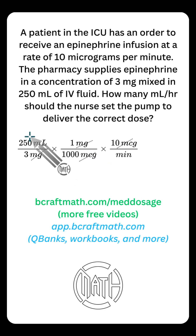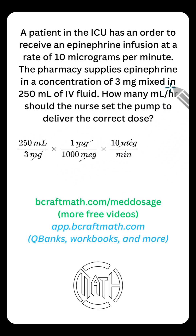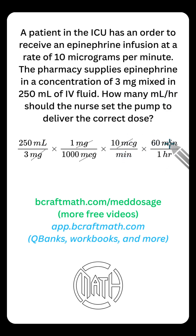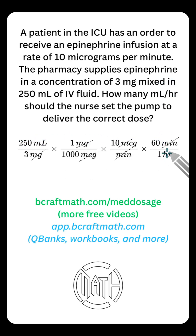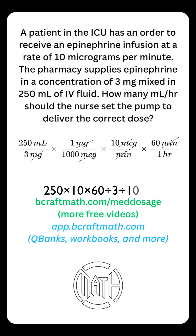If we stopped here we would have milliliters per minute, but we need milliliters per hour, so we have to get rid of minutes. We bring in a conversion: there are 60 minutes in one hour. By putting minutes at the top, we can cancel out minutes. Our goal was milliliters per hour — milliliters is the only word left at the top, hours is the only word left at the bottom. We've met our goal. When you meet your goal, you multiply all of your top numbers and divide by all of your bottom numbers, and when you do that, you get 50 milliliters per hour.